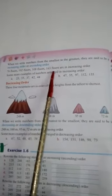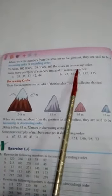So children, when we write numbers from the smallest to the greatest, they are said to be in increasing order or ascending order. 78 floors, then 102 floors, then 108 floors, and then 163 floors are in increasing order.